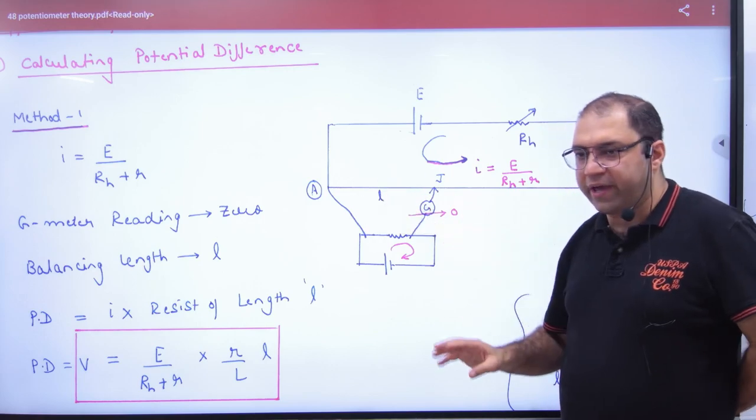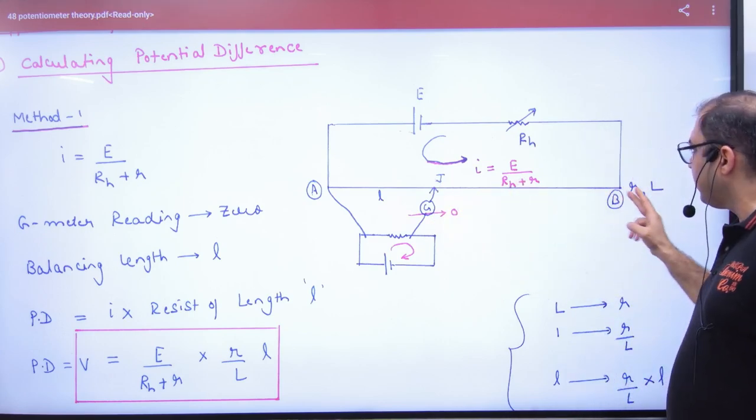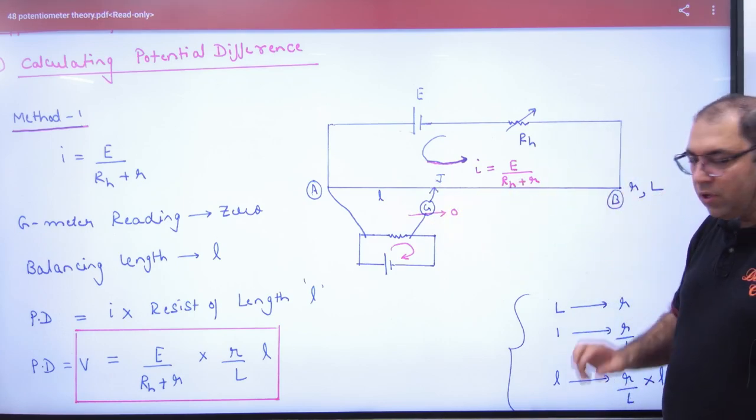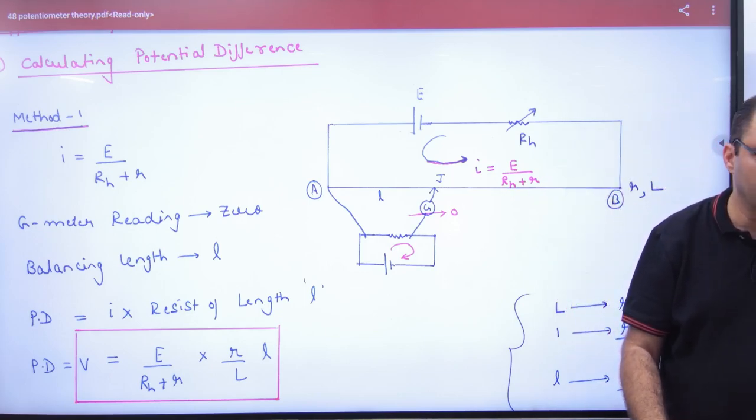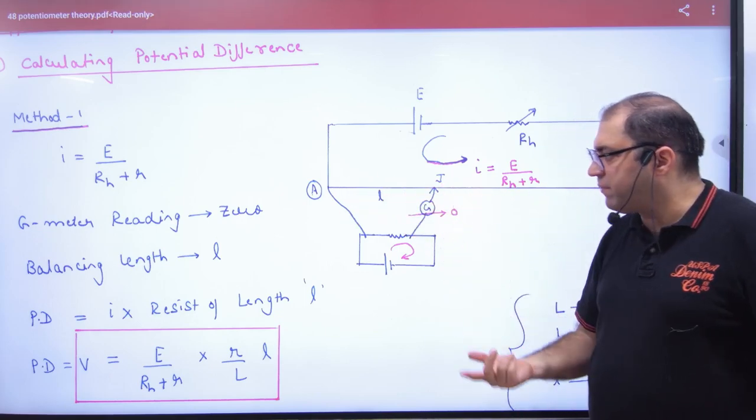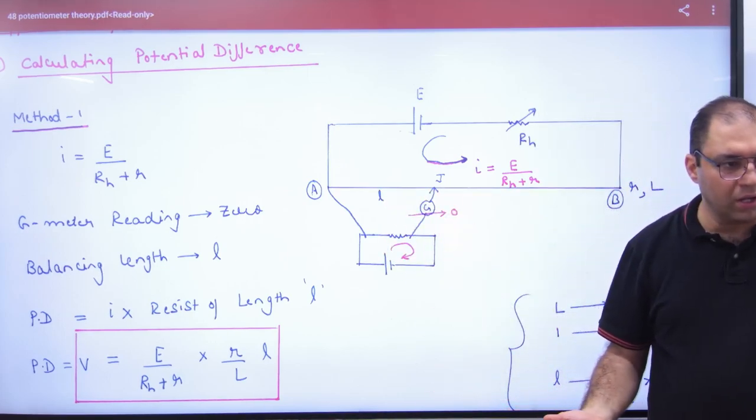When the galvanometer reading is zero, there will be no current through it. The main current will be E divided by (Rhe plus r). We will measure the balancing length L to determine the potential difference.